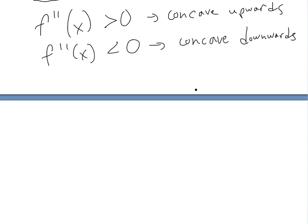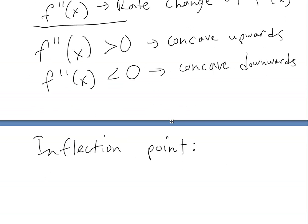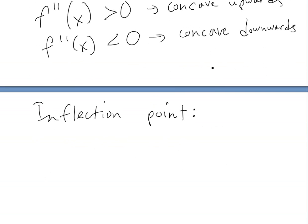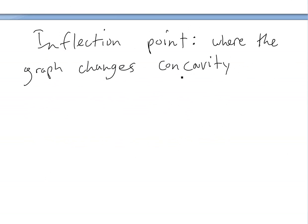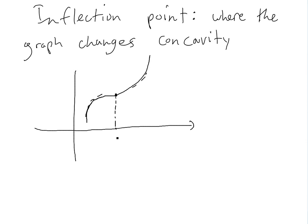Before we get to the second derivative test, let's look at what an inflection point is. An inflection point is basically the point where the concavity changes — from upwards to downwards, or from downwards to upwards. So if you have a graph that's concaving downwards and then changes to concaving upwards, the slope is decreasing and then all of a sudden increasing. At the point where it changes, we call this the inflection point P.